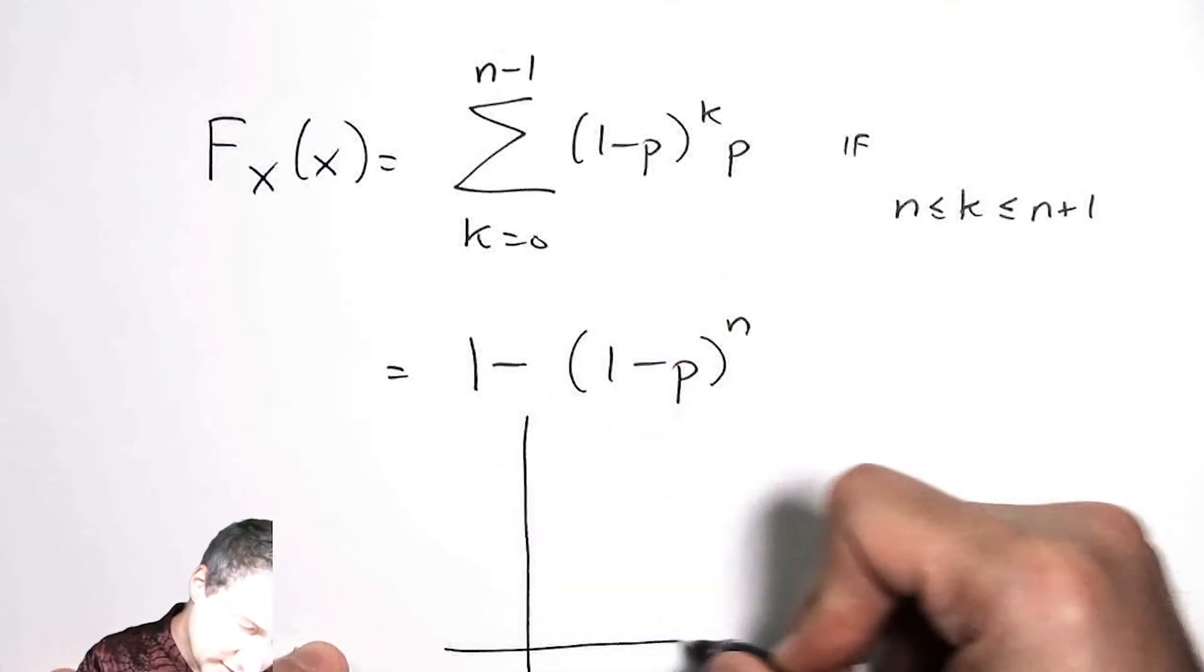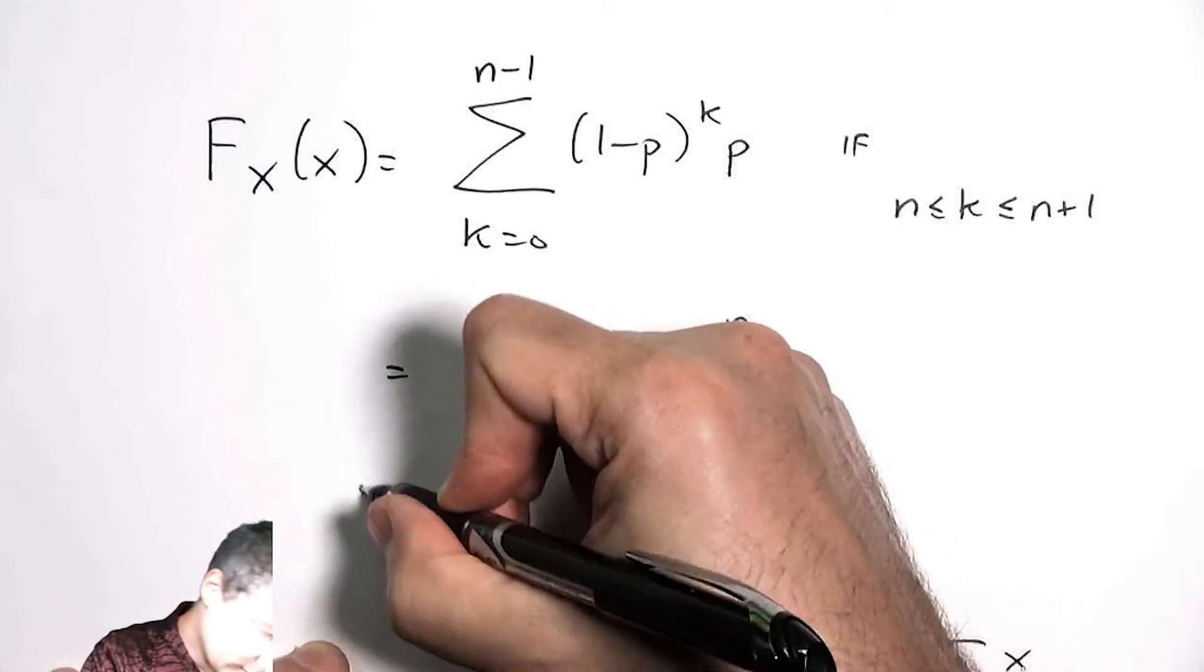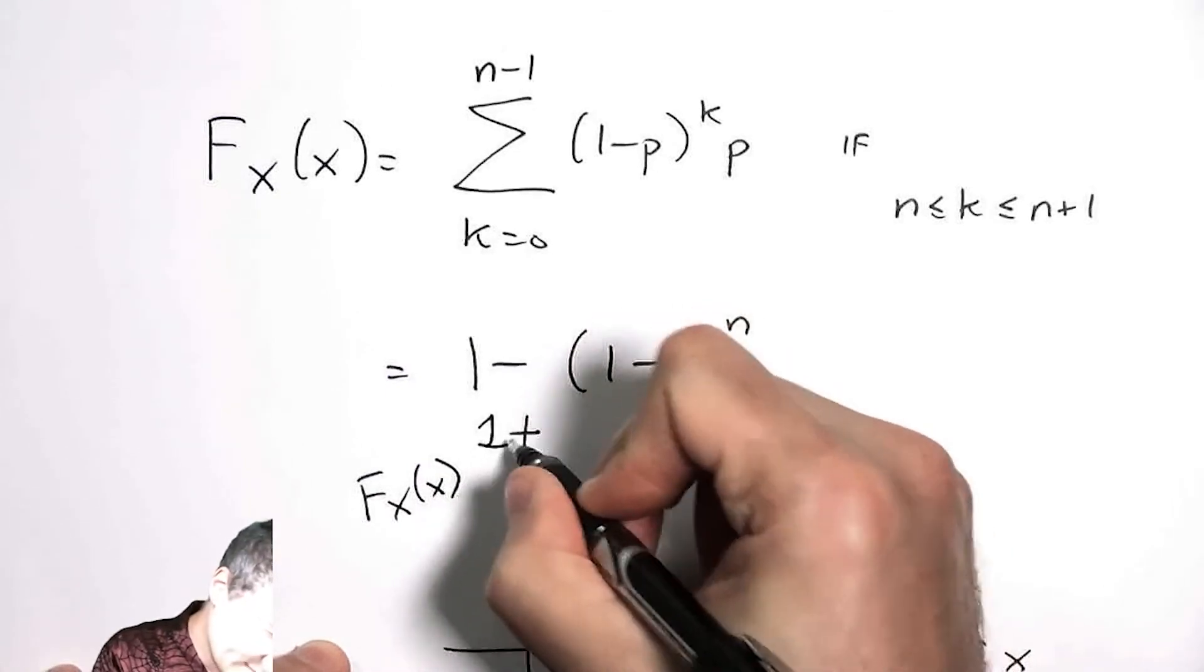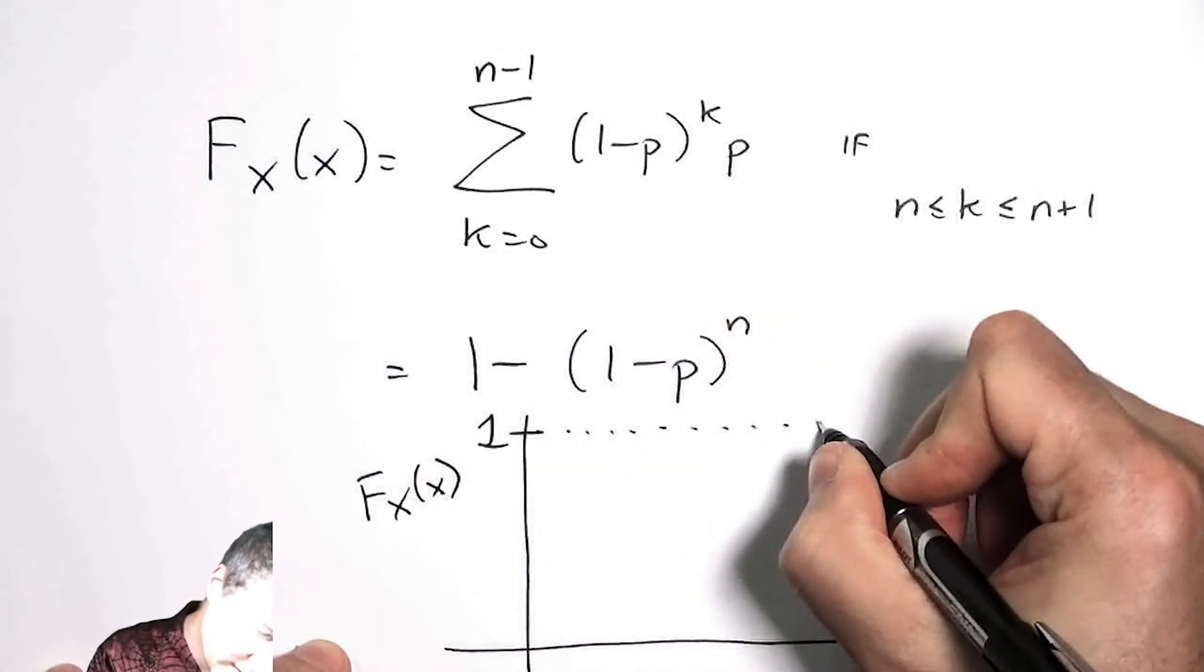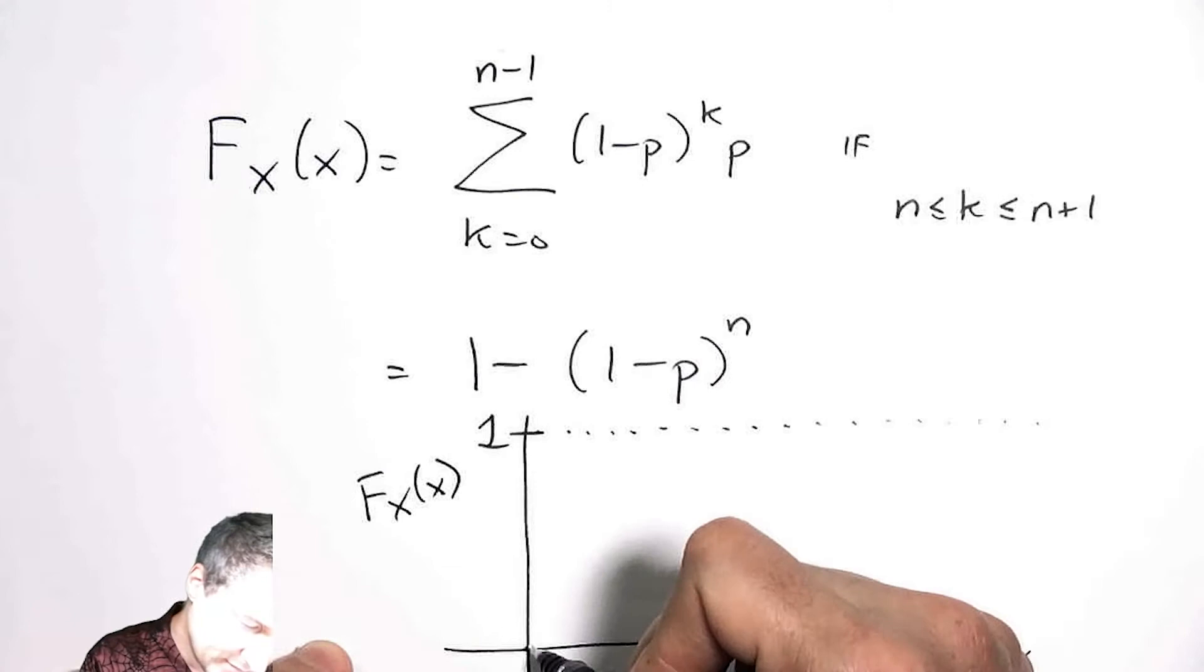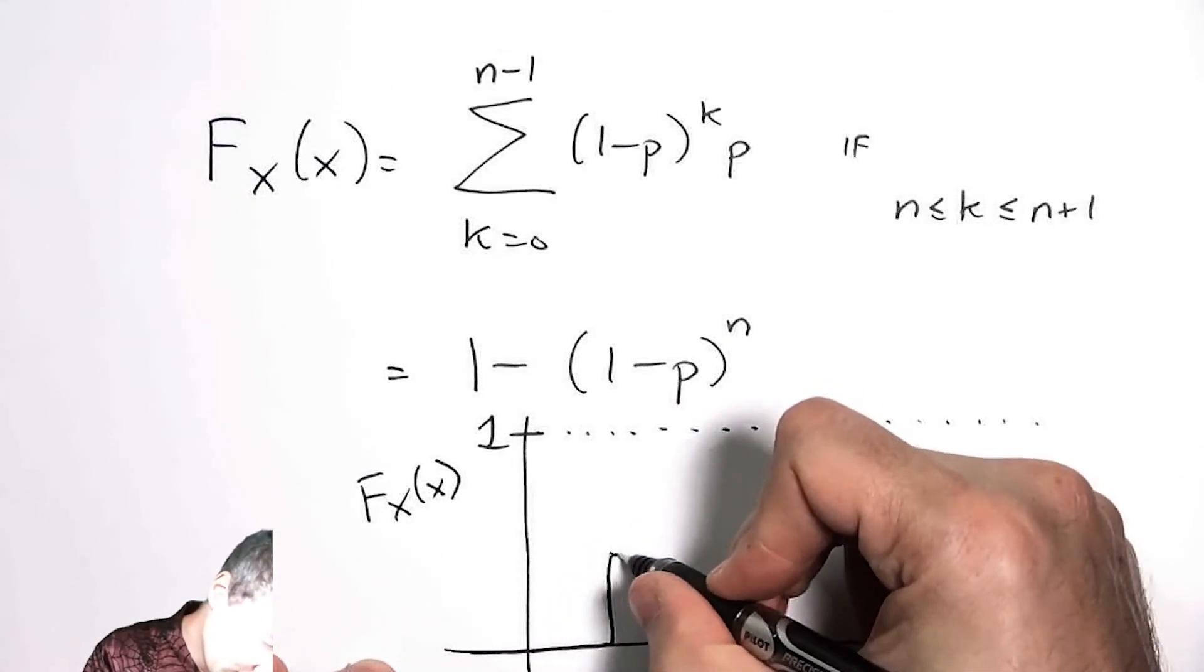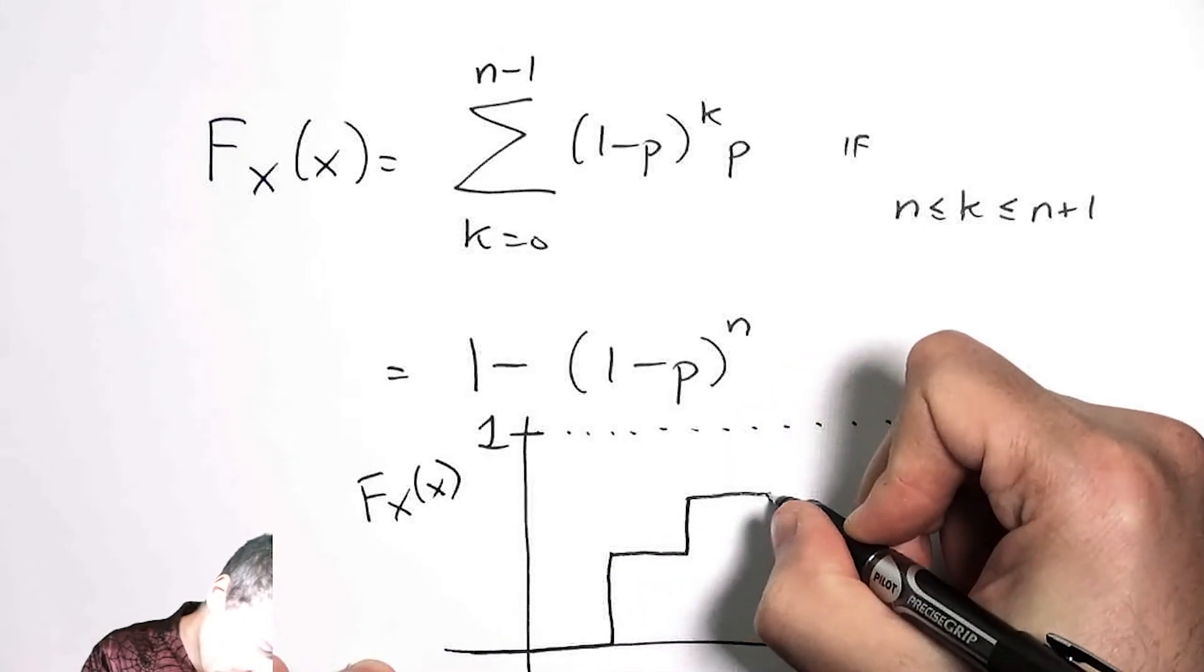What it would look like if I were to draw it would basically be something that I never reach one exactly because there's always a possibility of getting another coin flip. But I would accumulate lots of probability at the first flip and then a little bit less and a little bit less and a little bit less.